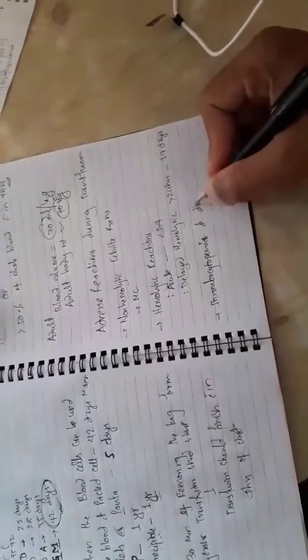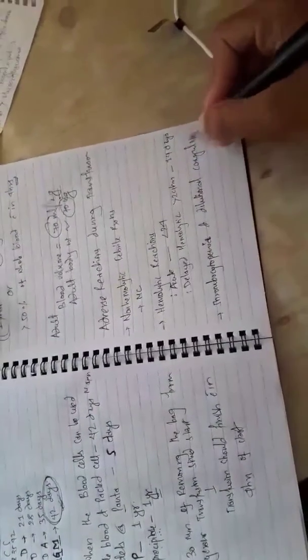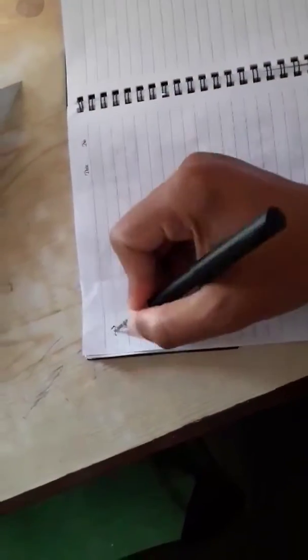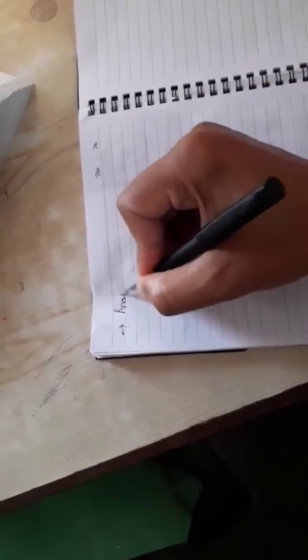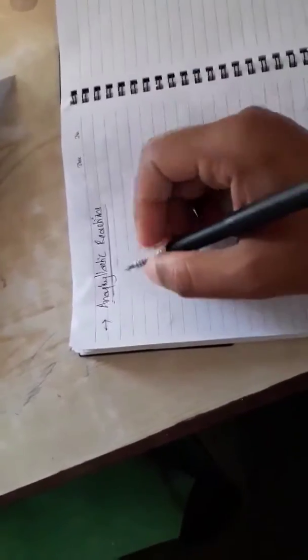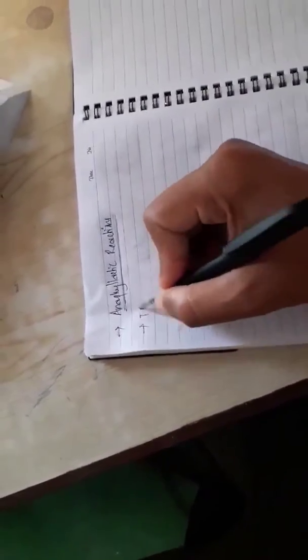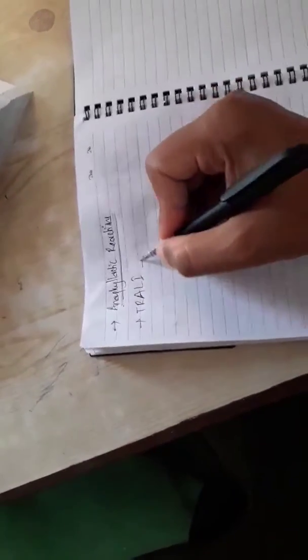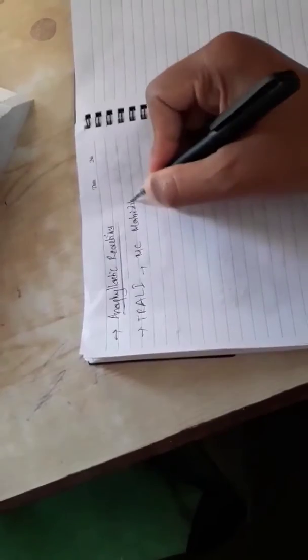Similarly, thrombocytopenia and dilutional coagulopathy may also be there. Anaphylactic reaction will be there and this is very serious, a life-threatening reaction we have to take care of. Similarly, TRALI - transfusion associated acute lung injury - will be there. This is the most common cause of morbidity and mortality due to transfusion.